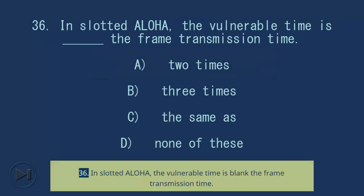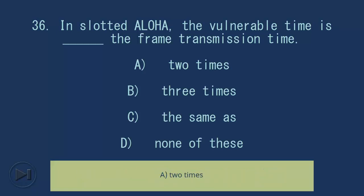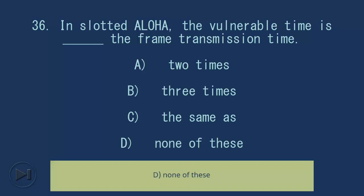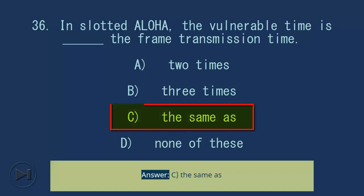Question 36: In slotted Aloha, the vulnerable time is blank the frame transmission time. A) 2 times, B) 3 times, C) The same as, D) None of these. Answer: C) The same as.